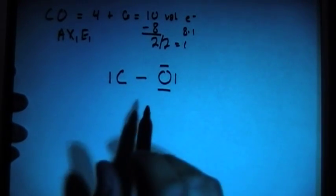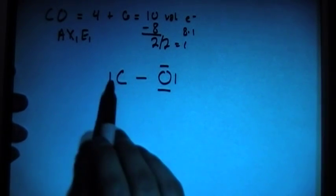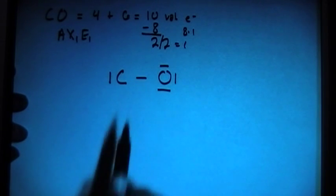That might be right, but however, notice that carbon does not have the full octet. It needs 8. Right now it only has 1, 2, 3, 4 electrons.